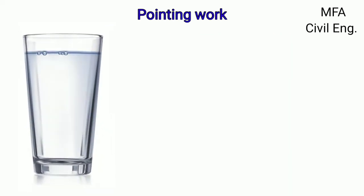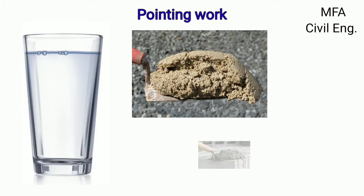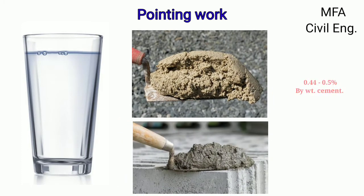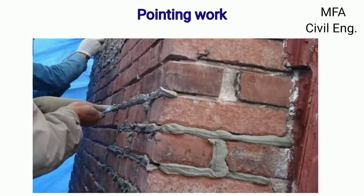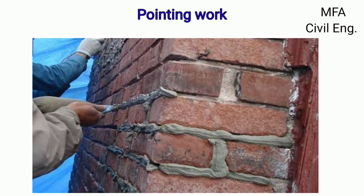The water proportion for both lime mortar and cement mortar varies from 0.44 to 0.5 times the weight of the cement. The process of pointing work is as follows.